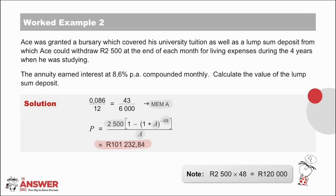An interesting side note: if we take R2,500 and multiply it by 48, this comes to R120,000 — larger than our answer of just over R100,000. So how is it that Ace drew more than what was deposited? The reason is that along the way, the initial deposit was earning interest.